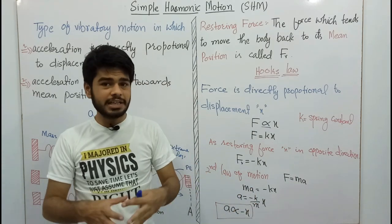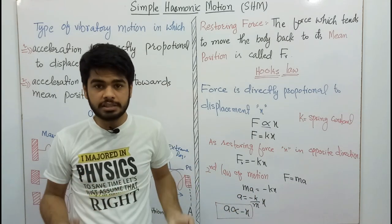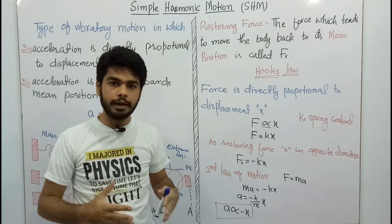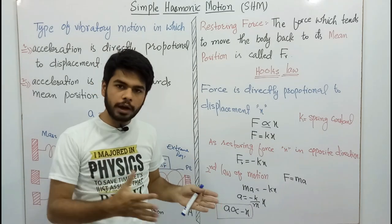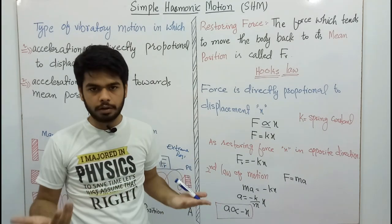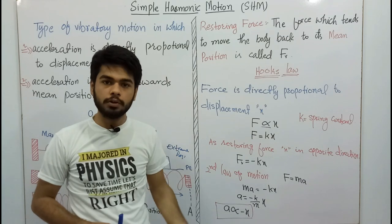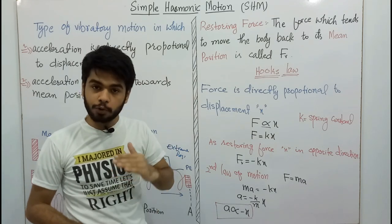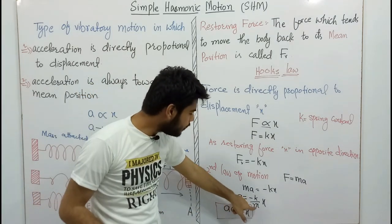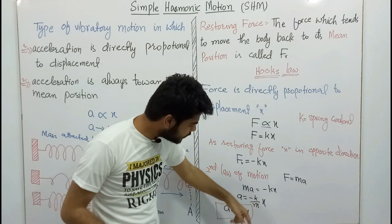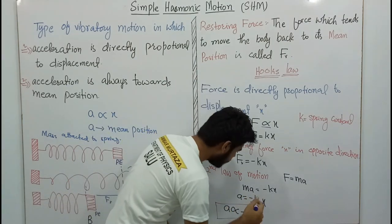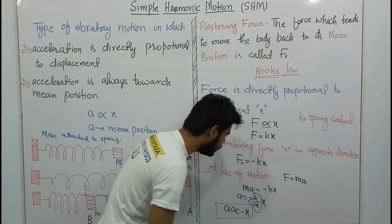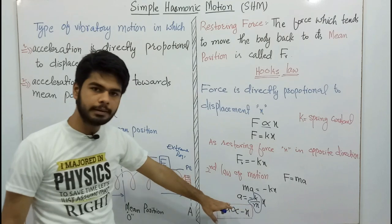Now x is the displacement — whether it is a stretch or a compression, before or after the mass, the spring constant k remains the same. We divide both sides by m, so that acceleration is directly proportional to minus x.